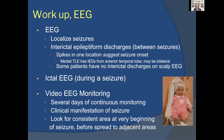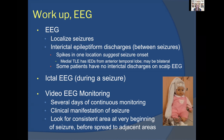EEGs — electroencephalograms — are very important, as they let us see the electrical activity in the brain during a seizure. An interictal EEG is recorded between seizures; a typical 20-30 minute EEG is usually captured between events. You look for where electrical activity appears abnormal — spikes or other abnormal patterns that suggest where in the brain the activity is originating. Mesial temporal lobe epilepsy will often show interictal discharges from the anterior temporal lobe, potentially even bilaterally.